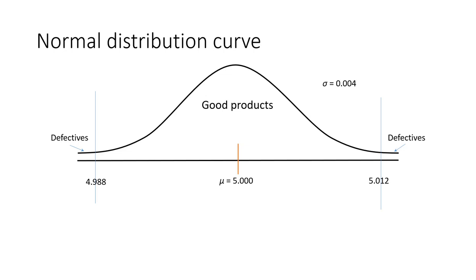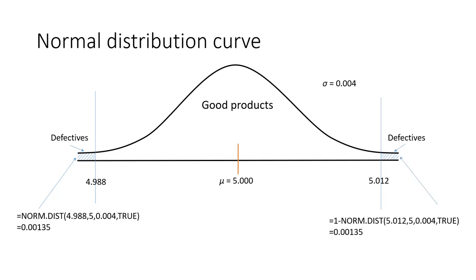The area under the curve — the shaded region as seen on the slide — can be calculated using the Excel formula NORM.DIST. The proportion of units below the lower specification limit is 0.000132. Similarly, we can calculate the proportion of defective units on the right-hand tail using the formula one minus NORM.DIST to find the proportion beyond 5.012 inches.